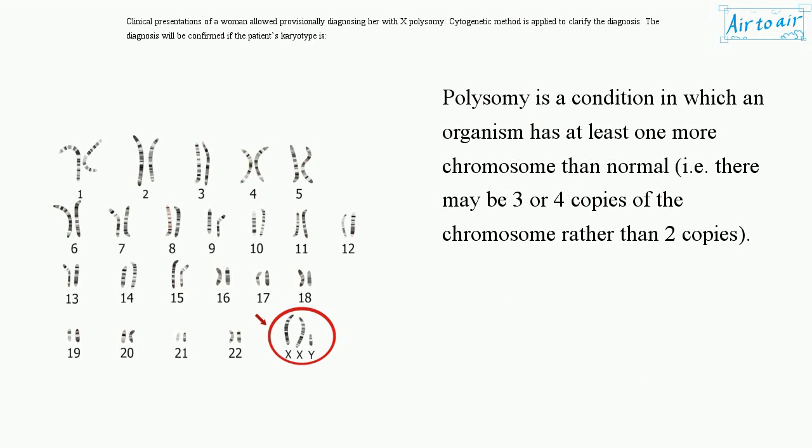Polysomy is a condition in which an organism has at least one more chromosome than normal, i.e., there may be three or four copies of the chromosome rather than two copies.